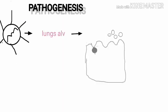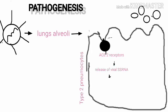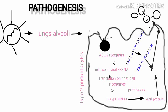Coronavirus enters the lung alveoli through the respiratory tract. It binds to the angiotensin-converting enzyme 2 (ACE2) receptor on the surface of type 2 pneumocytes. Release of viral ssRNA in the cytoplasm, which gets translated on the host cell ribosome to synthesize polyprotein and viral proteins. RNA-dependent RNA polymerase helps in RNA duplication and multiplication. This leads to damage of type 2 pneumocytes.